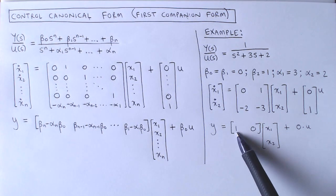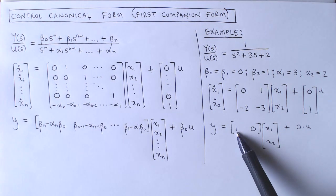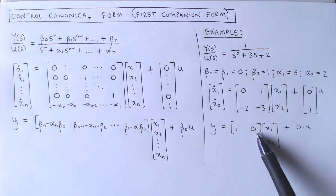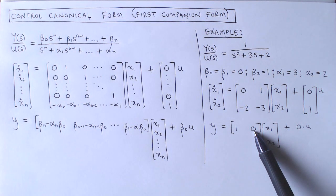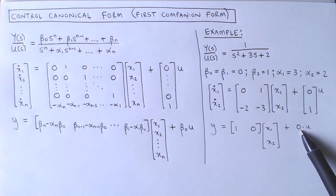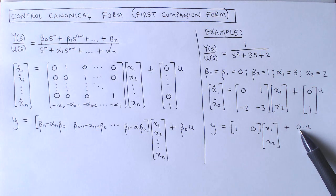The first element of the vector C is beta 2 minus alpha 2 times beta 0, which is 1 minus 0, and the second element is beta 1 minus alpha 1 times beta 0, which is 0 minus 0. And lastly, the scalar D is given by beta 0, which is 0.